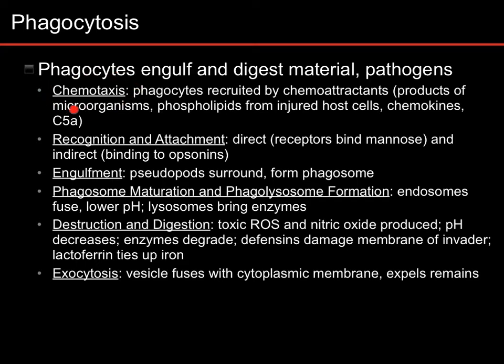So once you've moved to the area, you need to recognize and attach to the cell that you're going to eat. Some cells, for instance the sentinel phagocytes, like monocytes, macrophages, dendritic cells, can directly bind to them through their PRRs. Or they can directly bind to mannose on the surface of the cell.